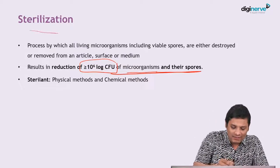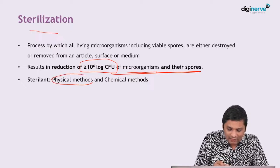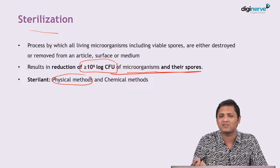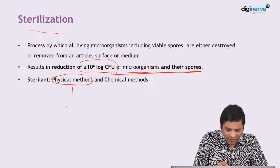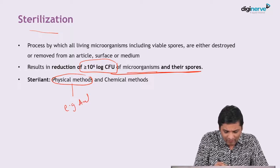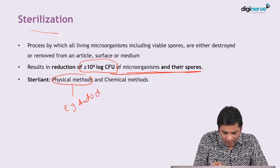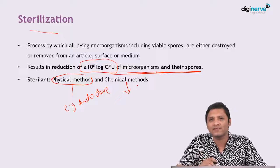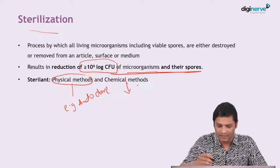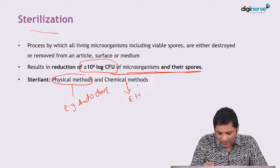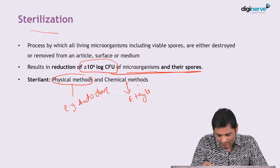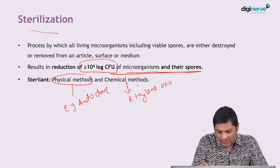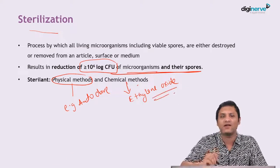Sterilization can be achieved either by a physical method — the classical example is the autoclave — or by various chemical methods. For example, ethylene oxide is a chemical sterilization agent which can achieve sterilization.